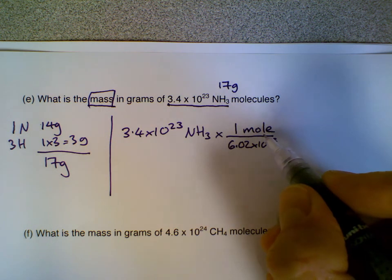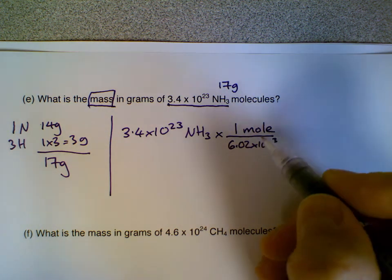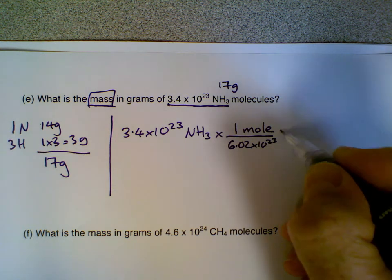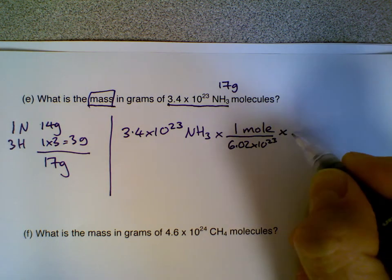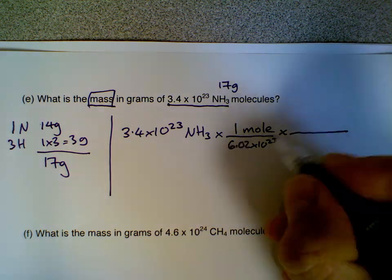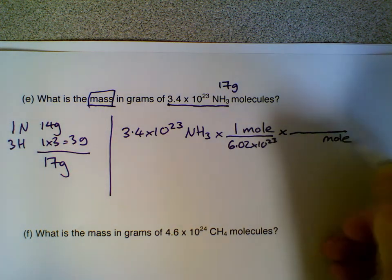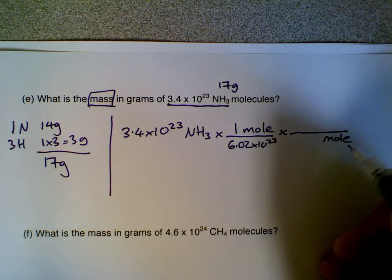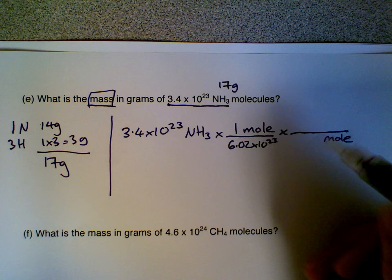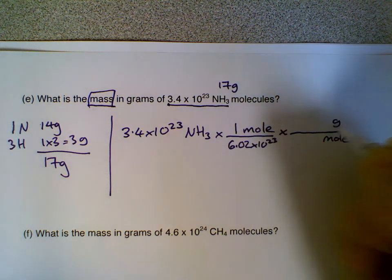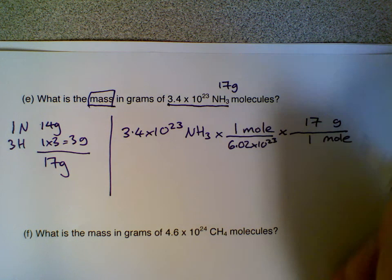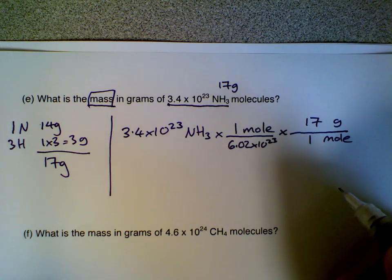But we now have our number of particles cancelled out, we have the moles, but we don't want moles, we want the mass. So we do another conversion, multiply sign and a line. This time we're going to put moles on the bottom here, so our moles will divide out. And we want our answer, the mass in grams at the end, so we put grams on the top. We know that one mole of NH3 has a mass of 17 grams, that's how we began this problem.